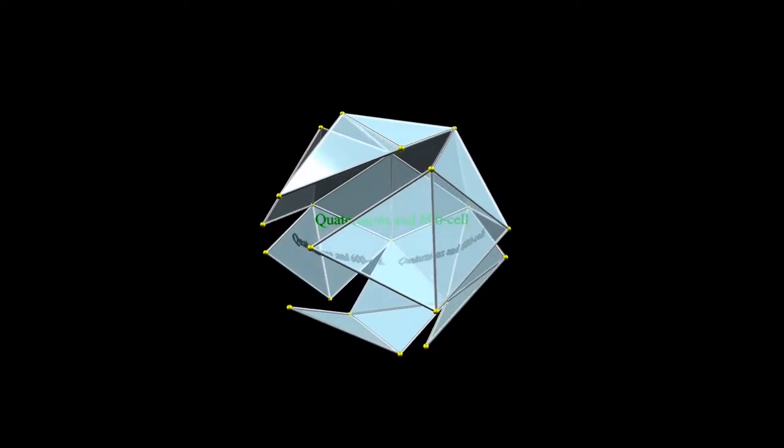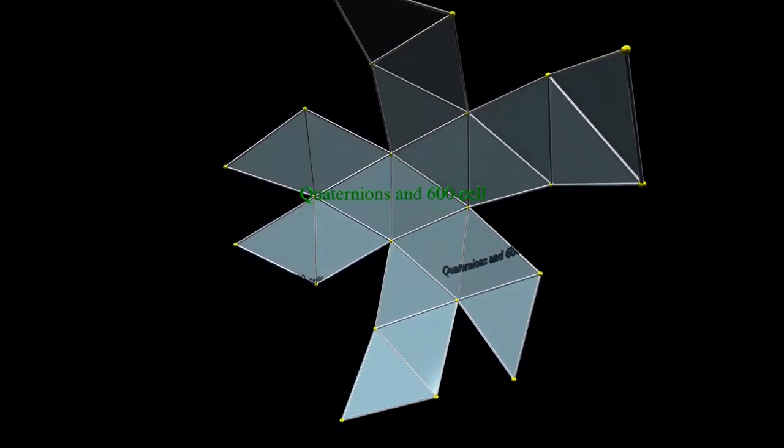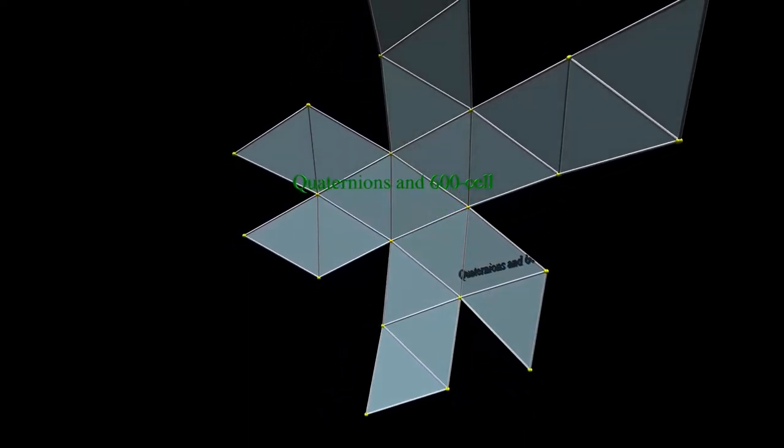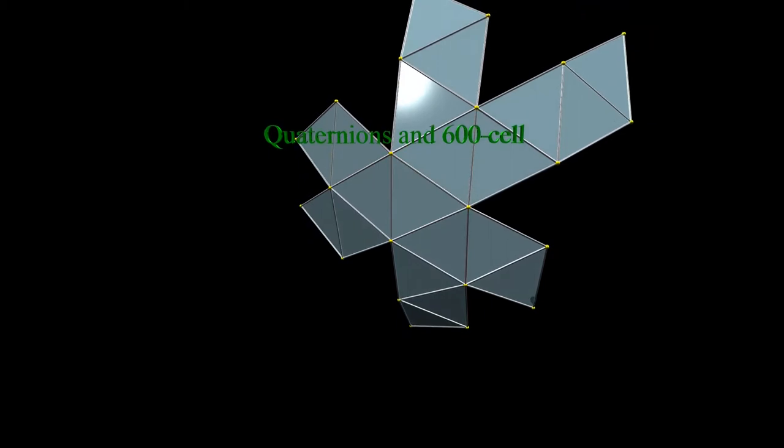Hello and welcome. In this clip we will have a look at 120 special quaternions. They will form vertices of a four-dimensional regular solid that is surrounded by 600 tetrahedra and it is usually referred to as the 600-cell.